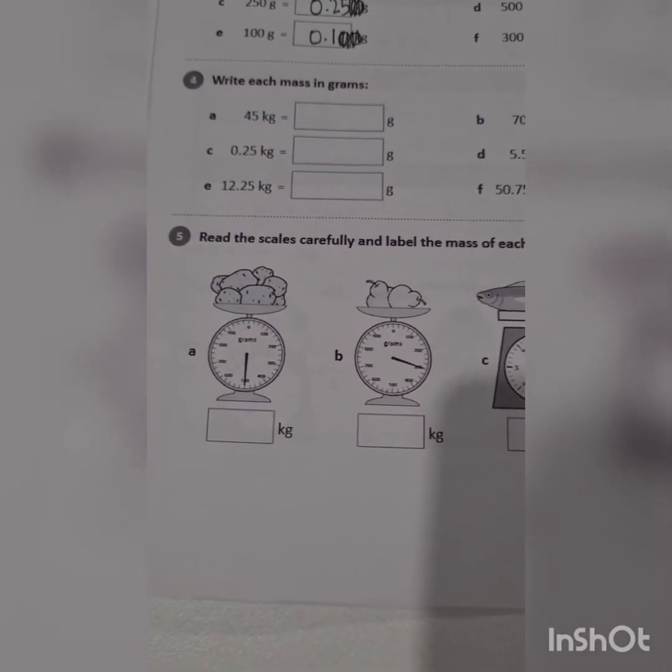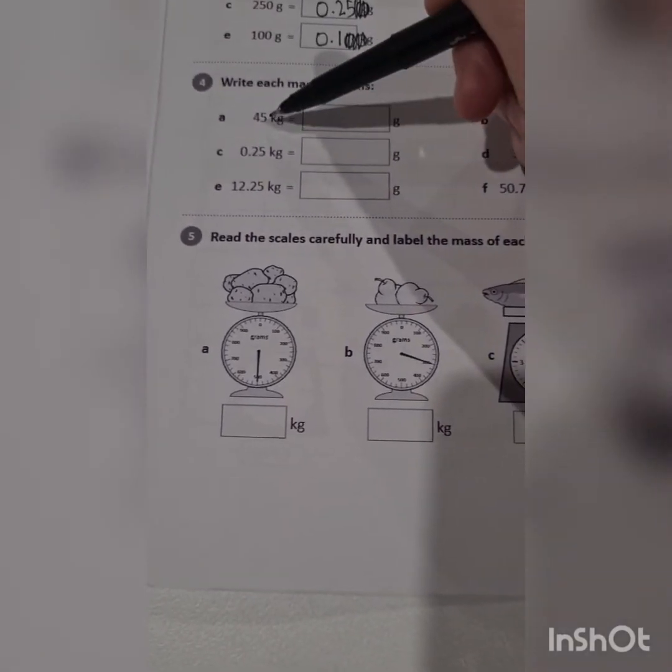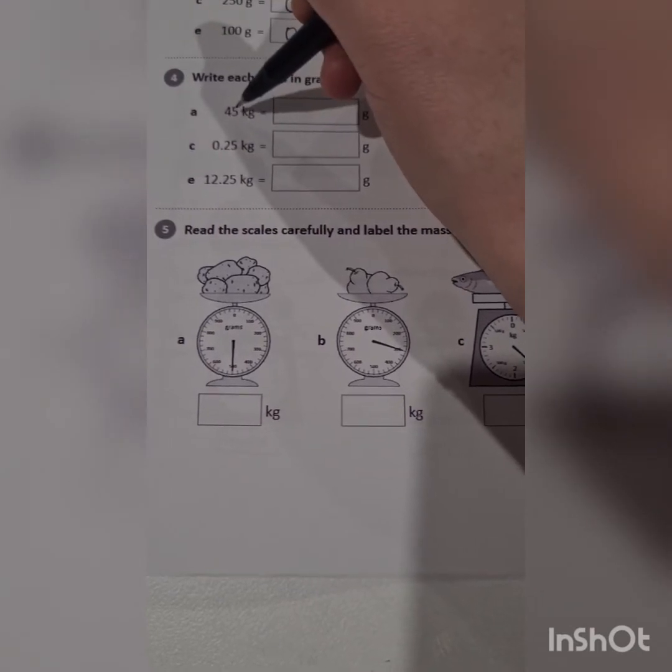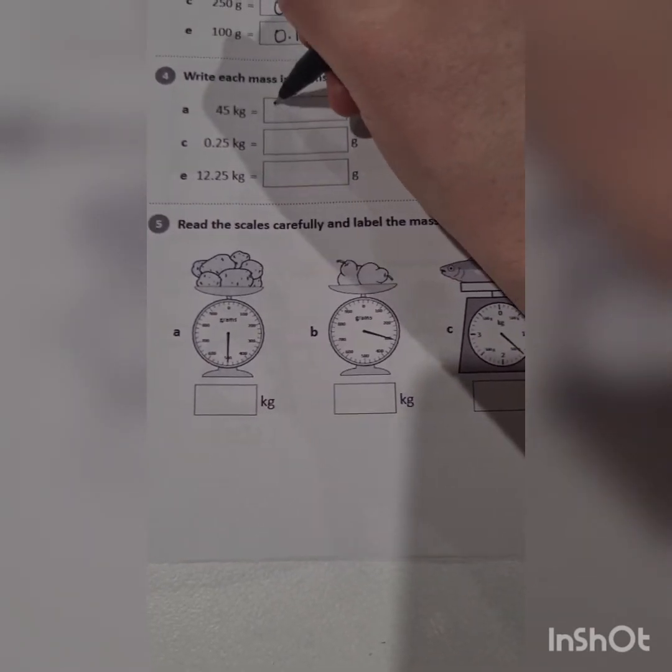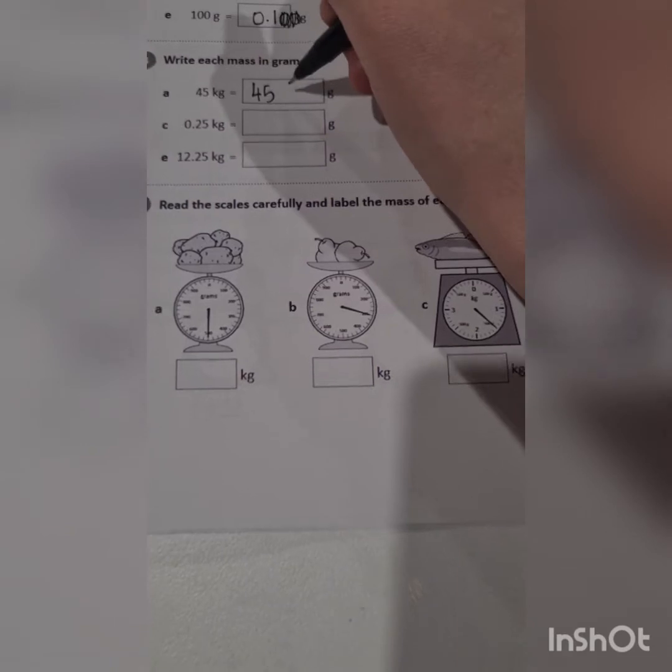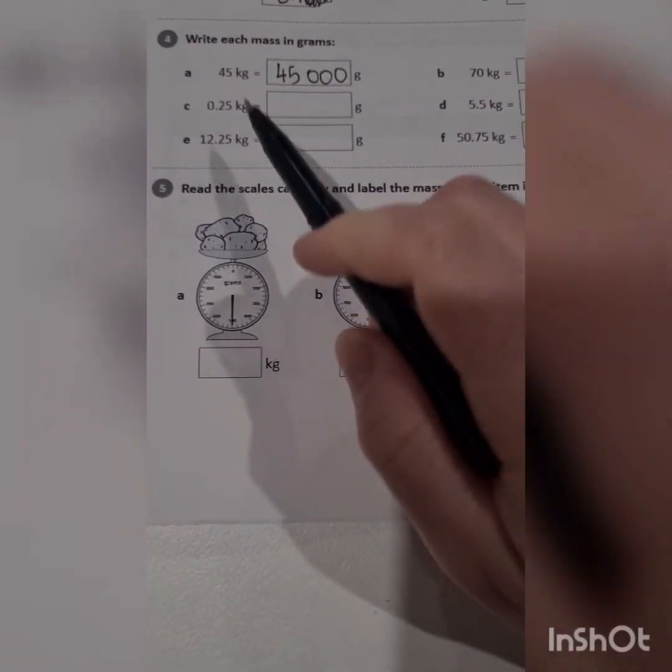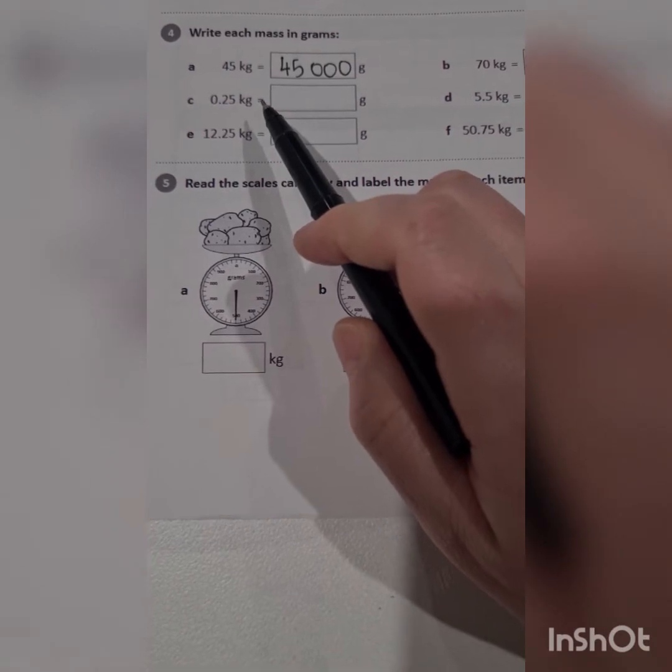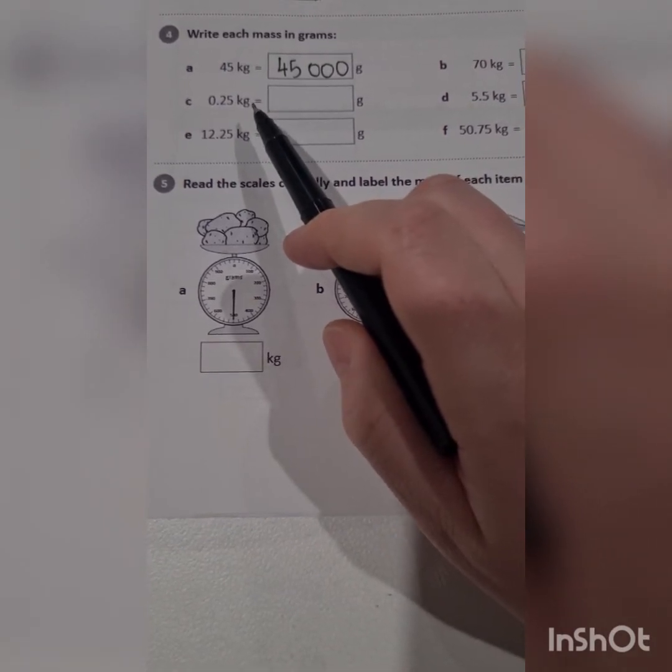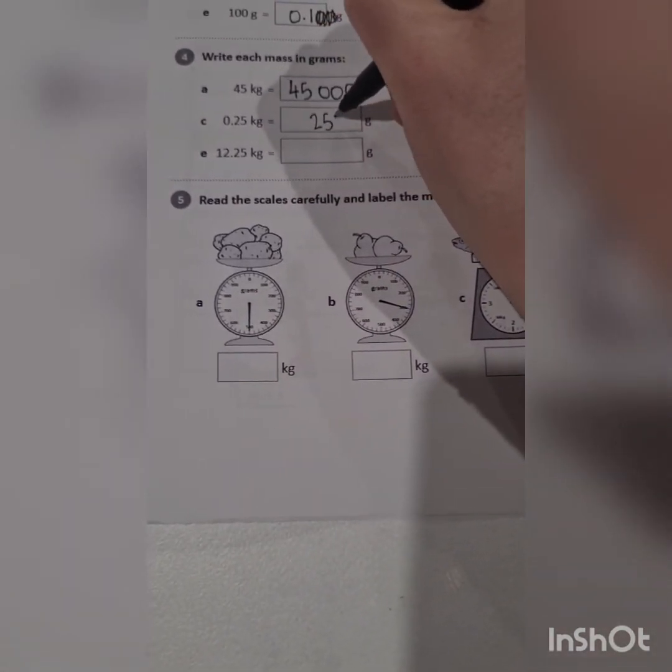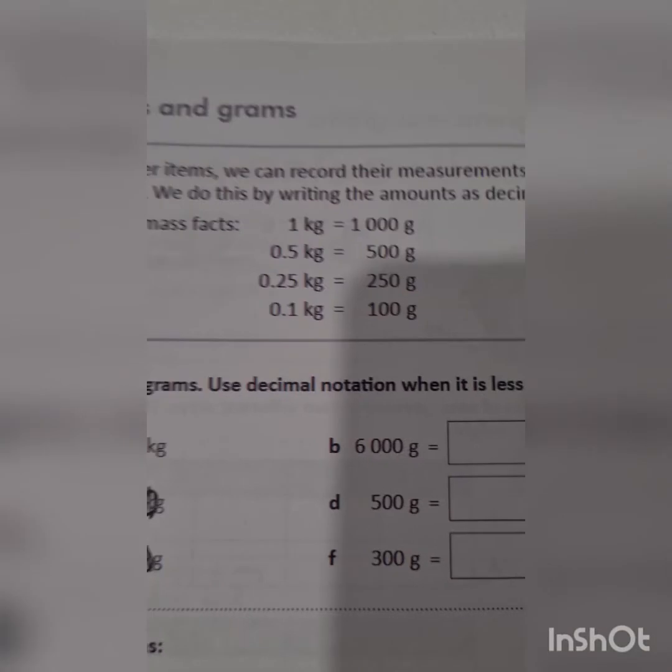Write each mass in grams. Make sure you read the number properly because these are all kilos, so 45 kilos is going to be 45,000 grams. 0.25 kilos means it hasn't yet reached 1 kilo. It's not going to be 1,000 grams, it's going to be less. It will be 250 grams. Remember you can look up the top if you need any help.